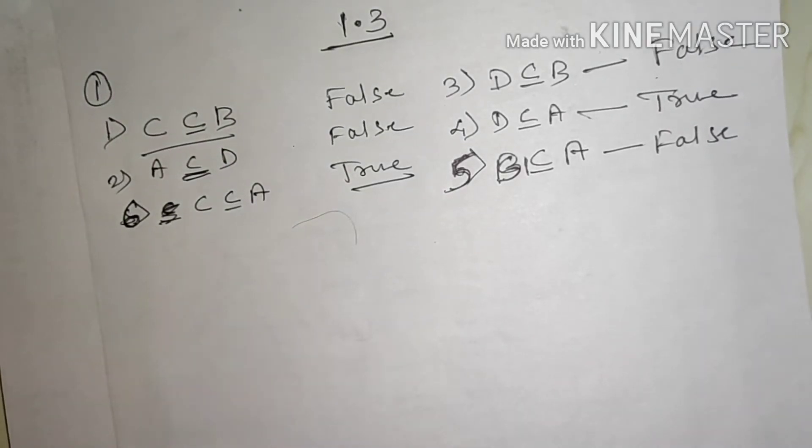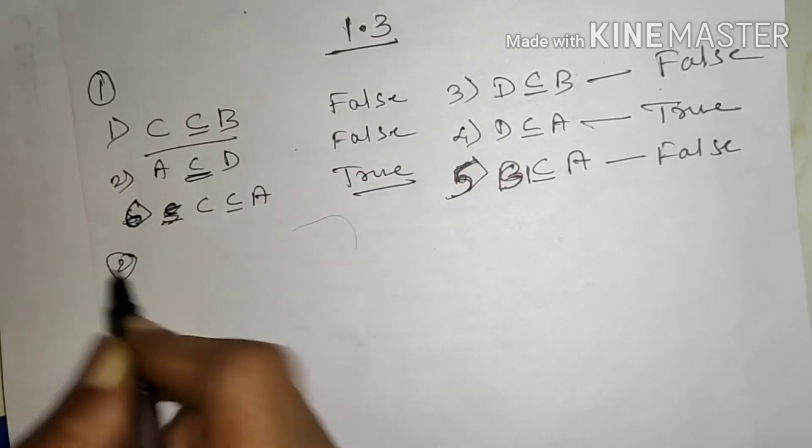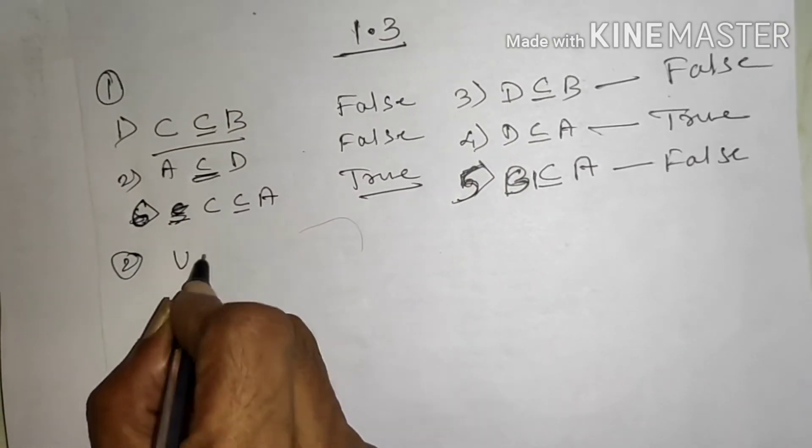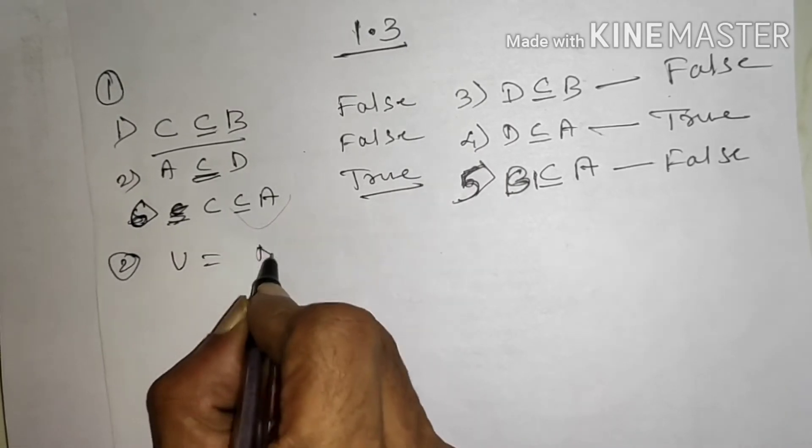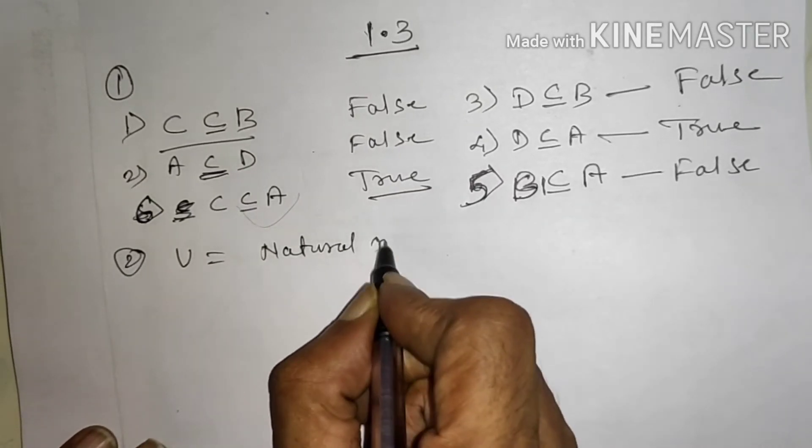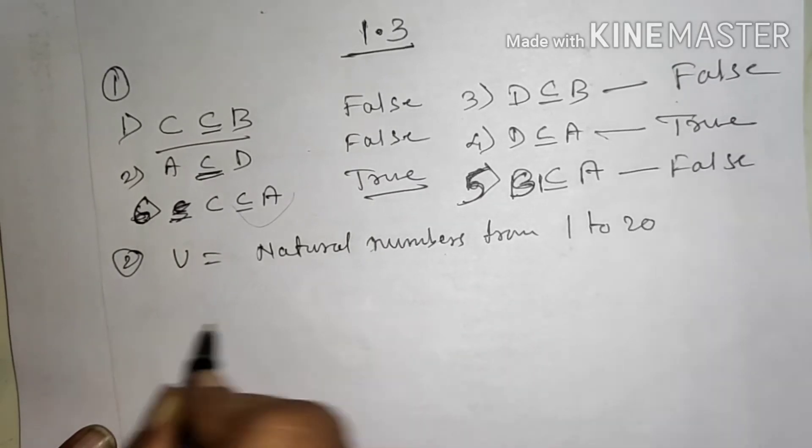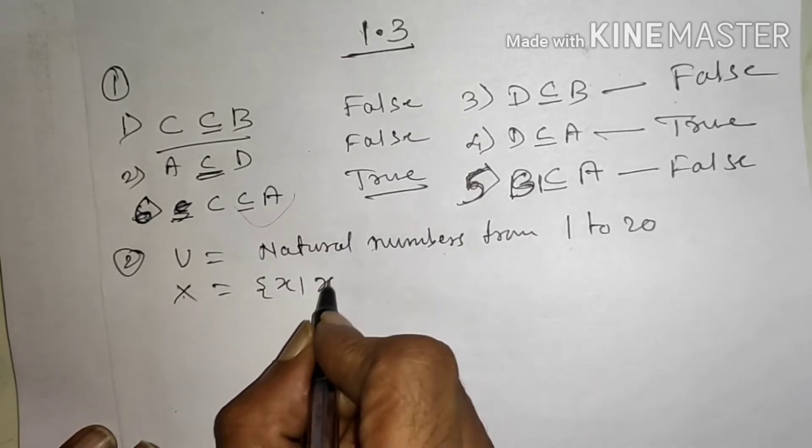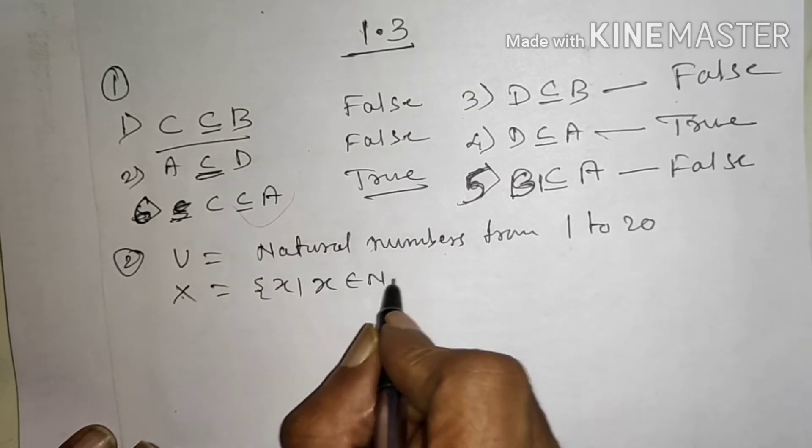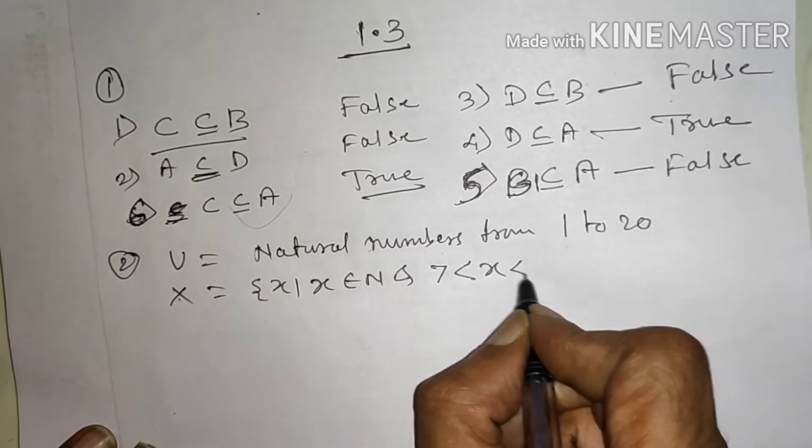Venn diagram ka use karna hai. First aapko diya hua hai union set do hai vo diya hai 1 to 20 natural numbers. X is the X bar X belongs to N and 7 is less than X and X is less than 15.